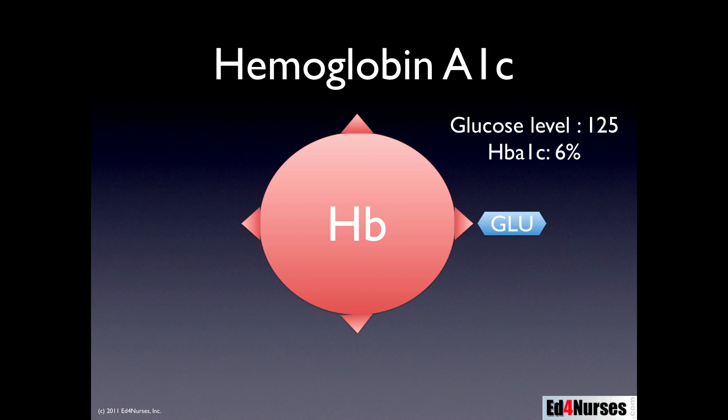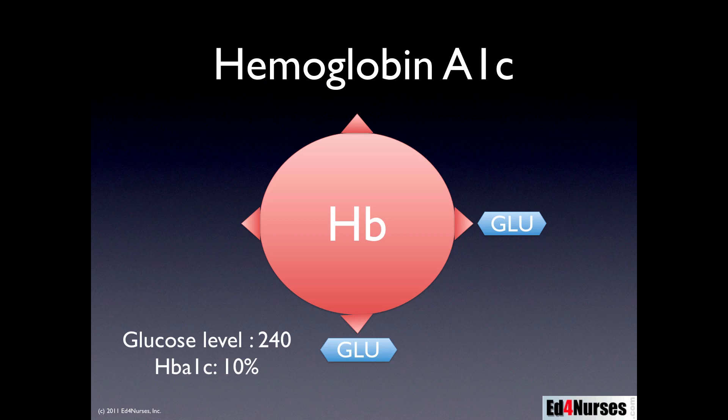With a glucose level of 125, your patient would have a hemoglobin A1C level of approximately 6%. If, however, the patient's blood glucose level were to rise to maybe 240 milligrams per deciliter, then the hemoglobin A1C level would rise too. More glucose would bind to hemoglobin, causing the overall amount of glycated hemoglobin to increase — now maybe to 10%. So the hemoglobin A1C tells us about overall glucose control.